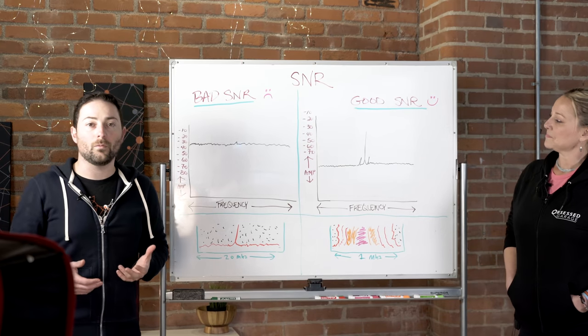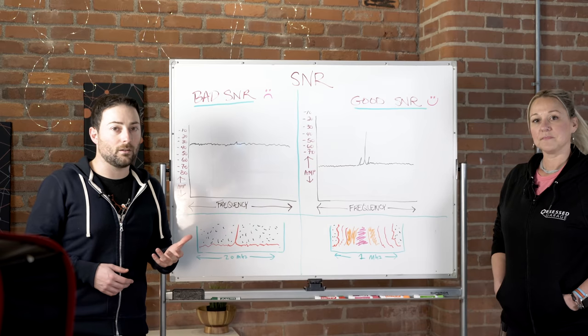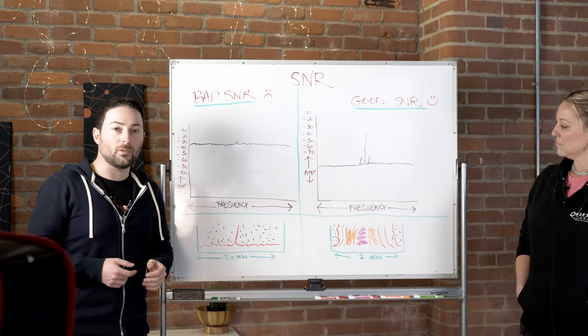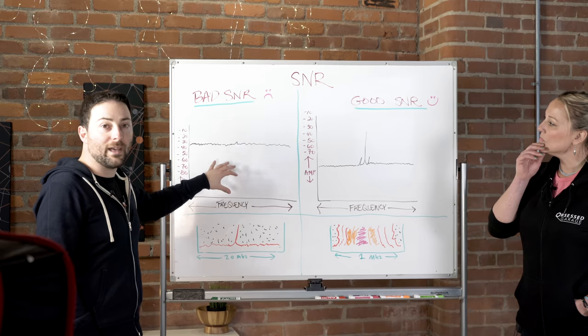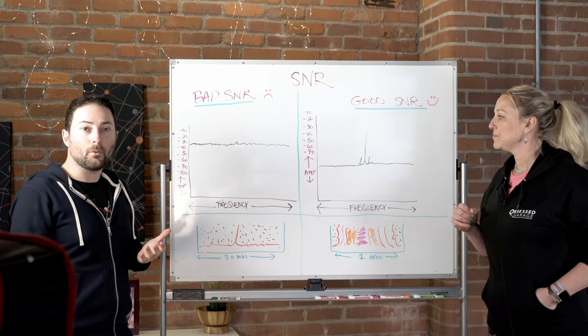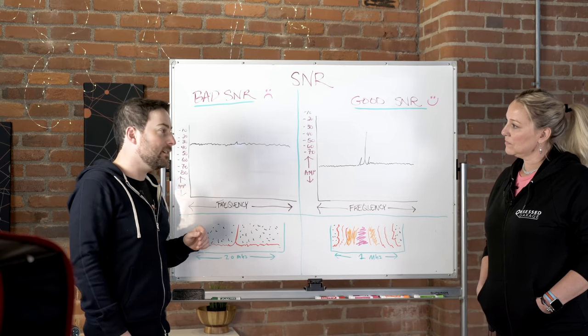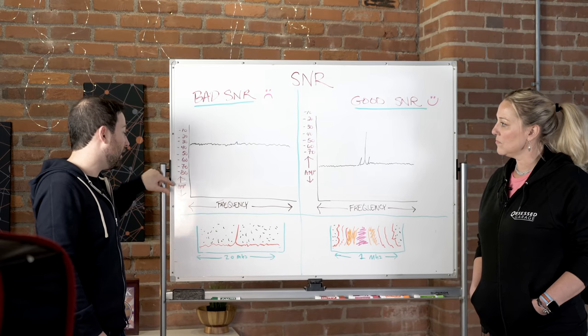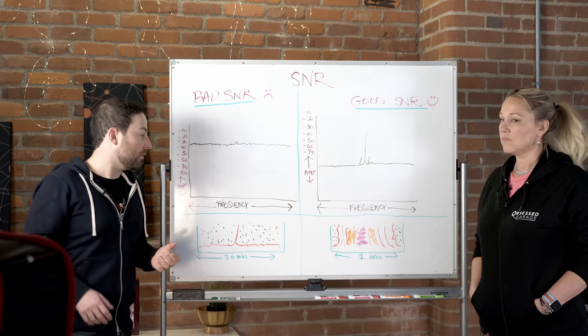All right. So, we talked a little bit about what SNR is and why good SNR helps and bad SNR hurts, but I think it helps to really visually look at the signals and understand. So, we drew a little illustration for you. Over here on the left, you have bad SNR and then you have good SNR on the right. And one thing that I want to point out is that the signal strength on both of these is actually the same. This scale over here, what you're looking at is amplitude or signal strength. And that's measured in something called decibels.